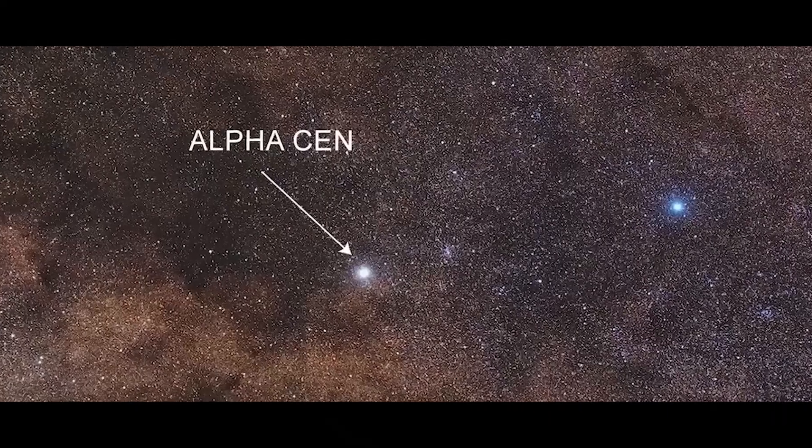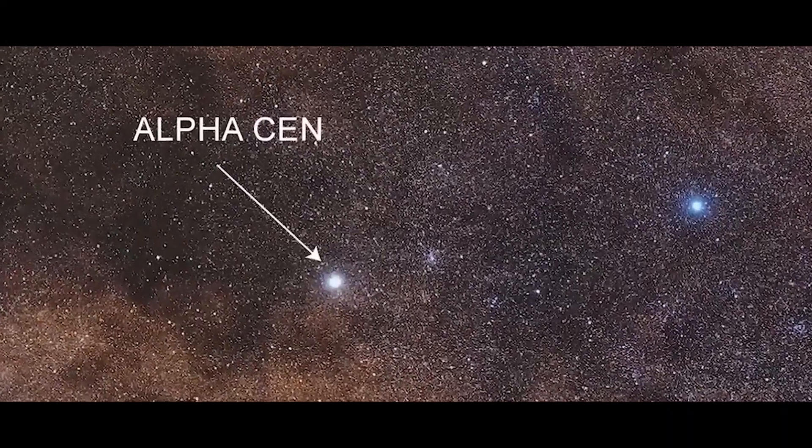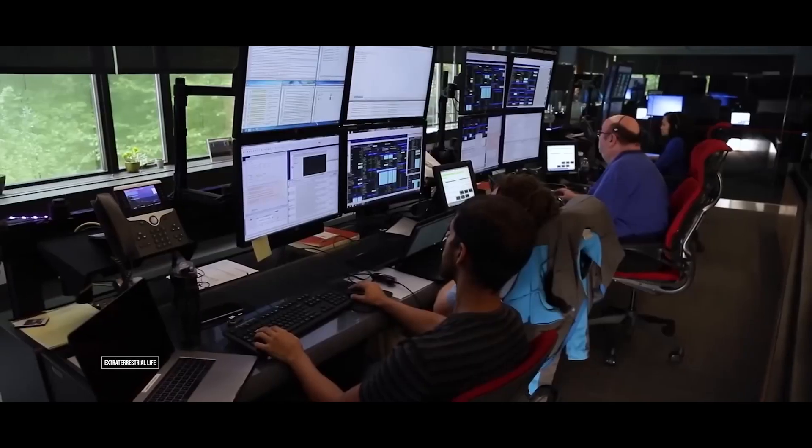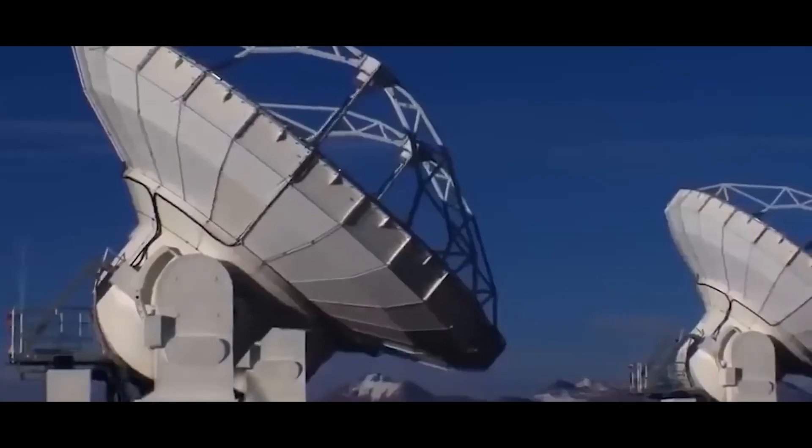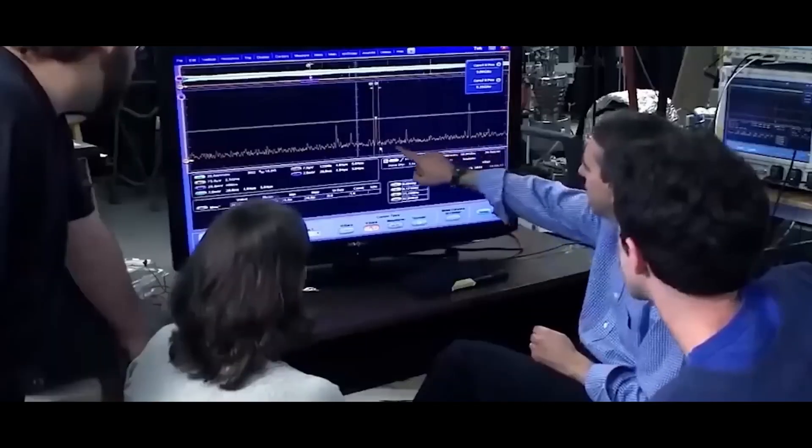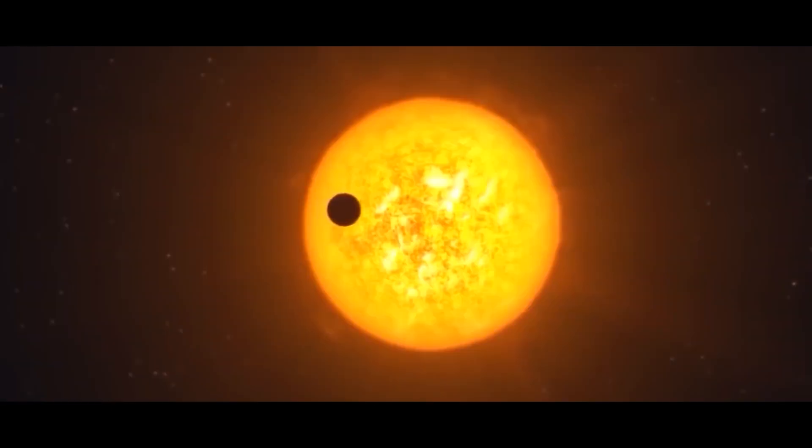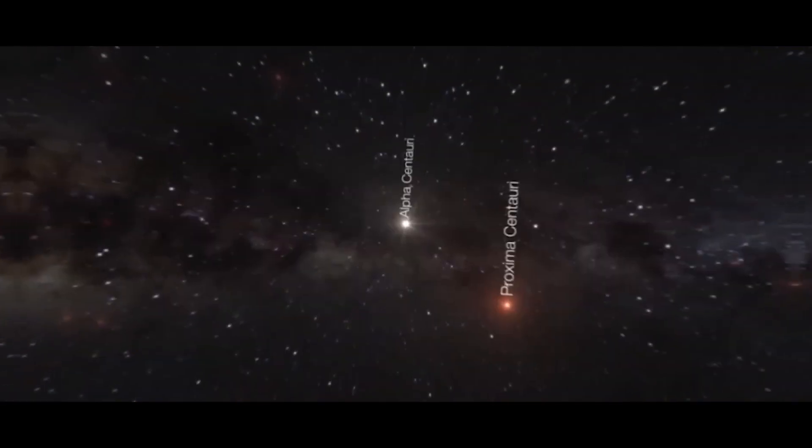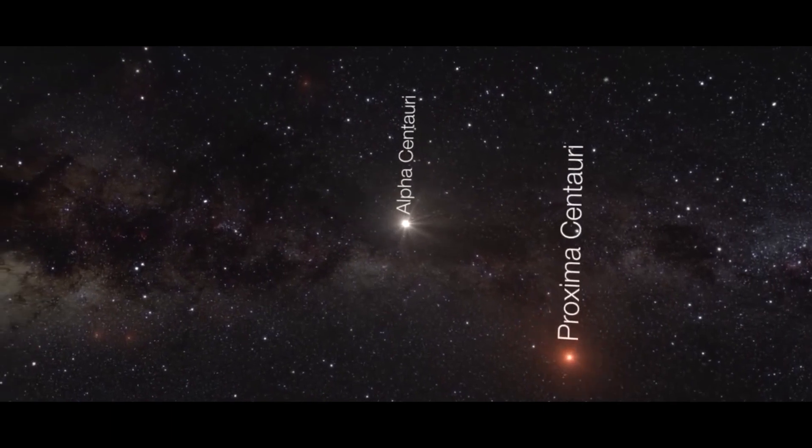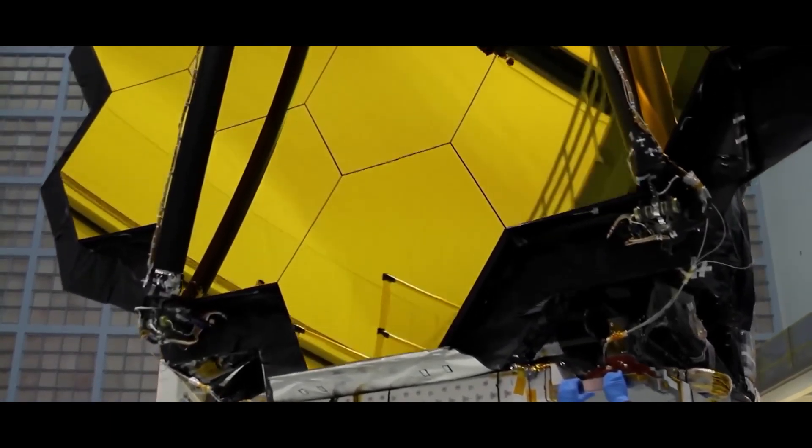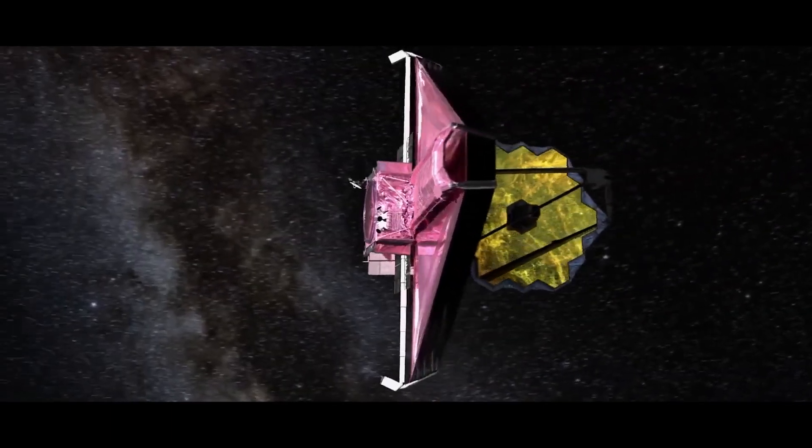James Webb Telescope's terrifying new discovery of city lights. Humanity has been searching for extraterrestrial life for a very long time. Researchers are looking for indications of life on the exoplanet Proxima B, which is located far away in space, using the brand new, extremely sensitive James Webb Satellite Telescope.